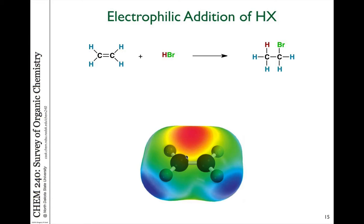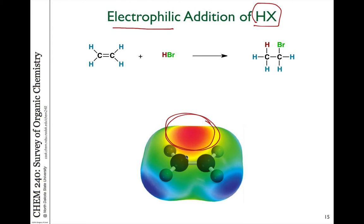Now I want to focus more closely on specifically the electrophilic addition of hydrogen halides to alkenes. We call this an electrophilic addition because the double bond has a lot of electron density associated with the pi bond — that's the source of reactivity for alkenes. That electron density is looking for something that's electron deficient, something that's electrophilic or electron-loving, something that's lacking in electrons.